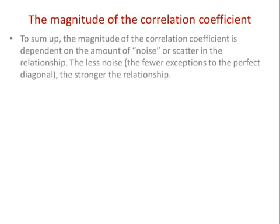Let's talk about the magnitude of the correlation coefficient. The bigger the number, the stronger the relationship — but that can be in either direction. The magnitude is entirely dependent on how much scatter there is in that relationship, or what we might call noise in the relationship. The closer people are to that perfect diagonal, the stronger the relationship.